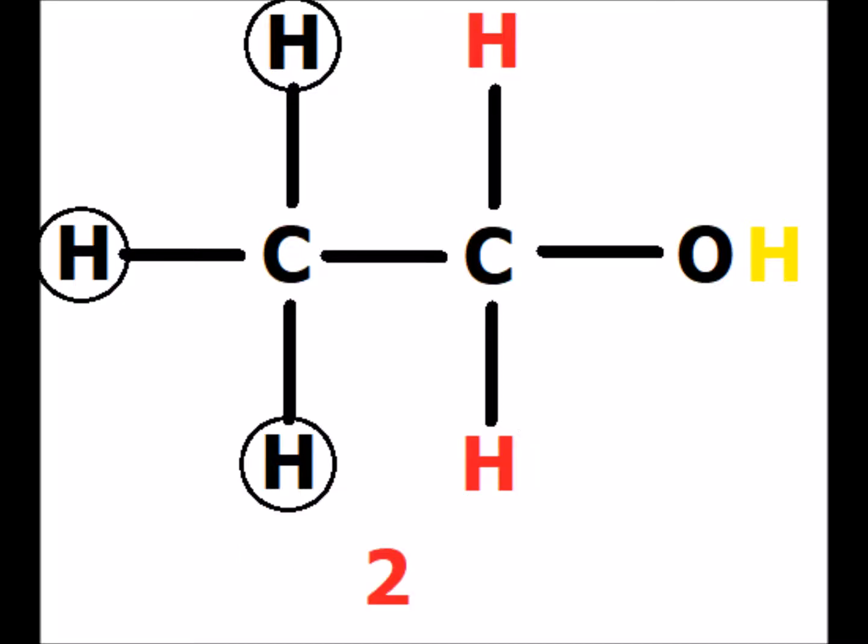The two red hydrogens have the three black hydrogens as their neighbors. Therefore, the signal for the red hydrogens will be split into a quartet, into four sub-peaks. The hydroxyl hydrogen does not count as a neighbor because it is an alcohol, and because of exchange, it does not couple to its neighbors.